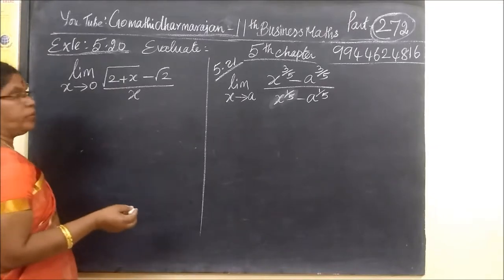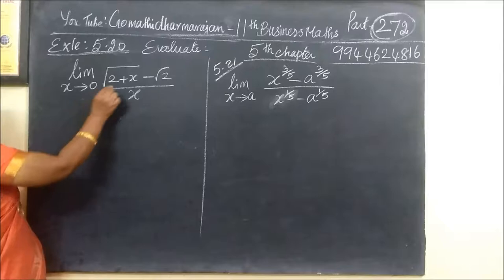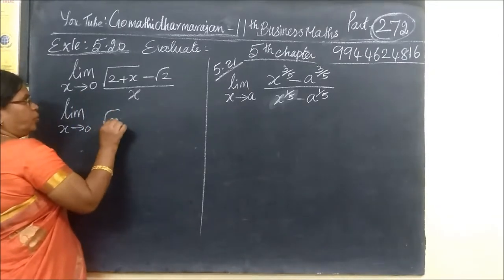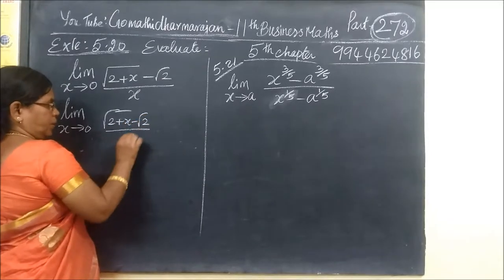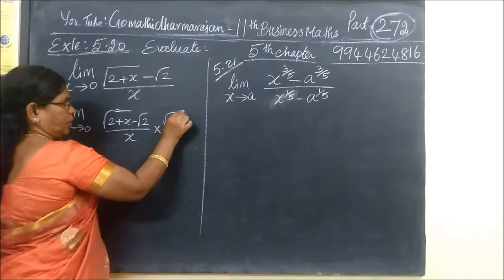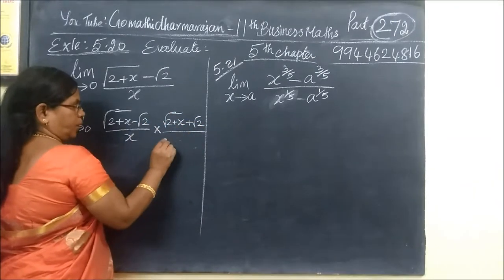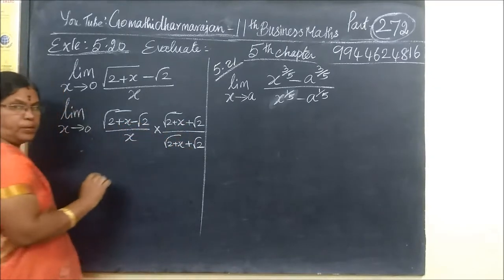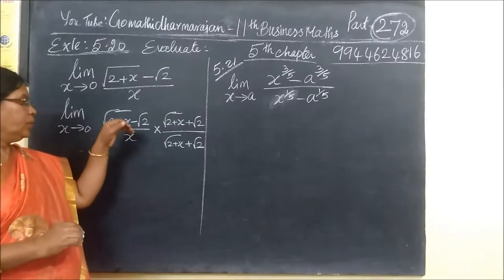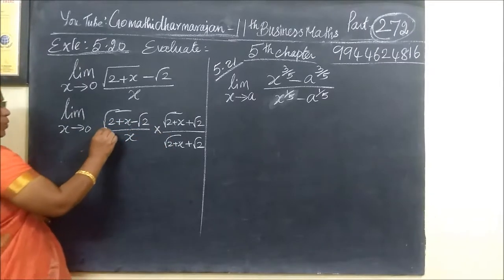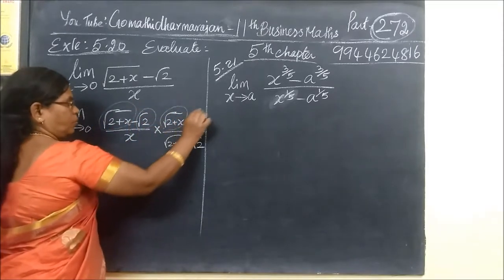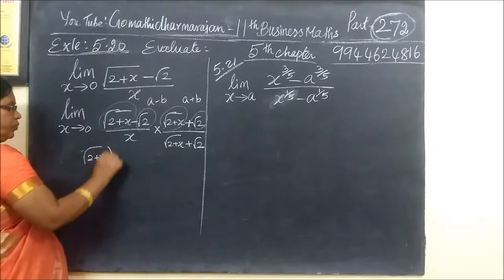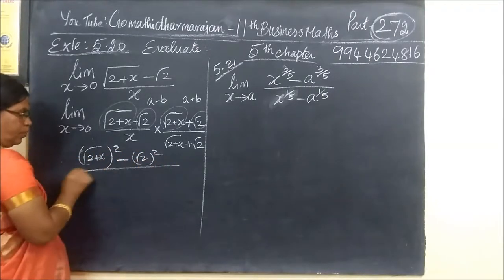Question number 5.20. This question is solved using the conjugate method — we take the conjugate of the numerator. The expression is root(2+x) minus root(2), divided by x. We multiply by the conjugate of the numerator. This is of the form (A minus B)(A plus B).